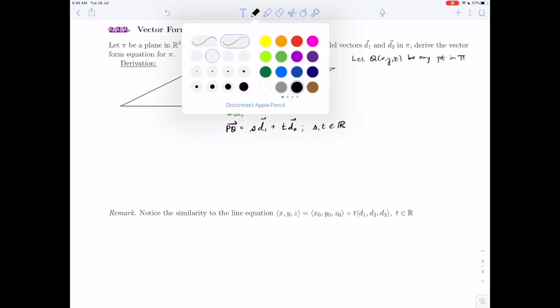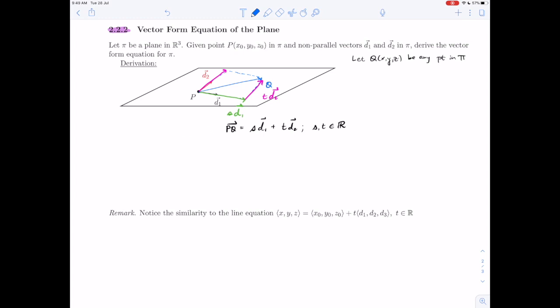Now remember this is just a sketch, but we do have an origin somewhere, so let me add it here. Reminding ourselves that p and q have positions and can be expressed as pq equals oq minus op, and that is still s times d1 plus t times d2. Then solving for the unknown: q is any point, p is given. So op plus s times d1 plus t times d2, and then filling in the components that we know.